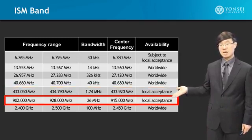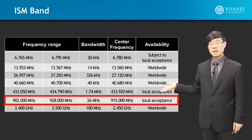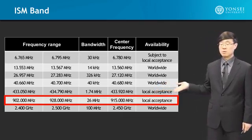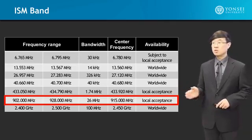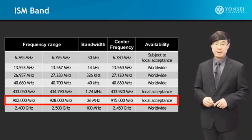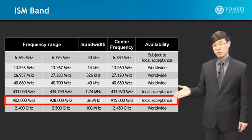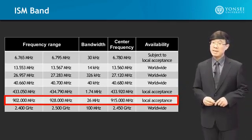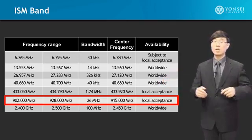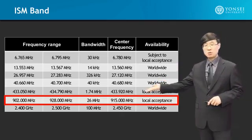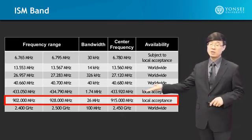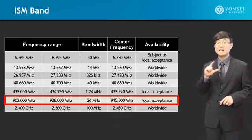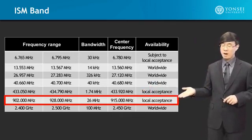The 900 MHz range reaches from 902 MHz to 928 MHz with a bandwidth of 26 MHz, and is restricted to local acceptance. Many countries use this frequency band for ISM-based operations. It is very popular because it has very good penetrating characteristics — this signal will go through solid walls and have far reach very effectively. The bandwidth of 26 MHz is sufficiently large for high data rate communication. Also, at the 900 MHz range, the antenna can be small. That is why this ISM band is very popular.